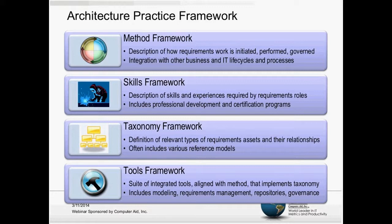We need a taxonomy framework. This is what most architecture frameworks are primarily composed of — things such as the Zachman Framework, Federal Enterprise Architecture, or DODAF, mostly focused solely on the taxonomy. Alternate words would be a meta-model or an ontology. This taxonomy describes the different kinds of architectural assets we might want to track within our organization — their relationships, semantics, and metadata — and we often incorporate industry standard reference models as a baseline.